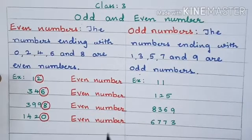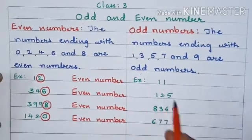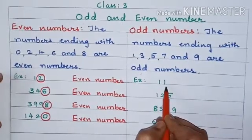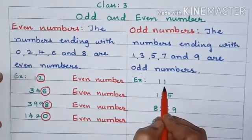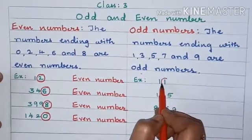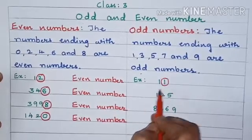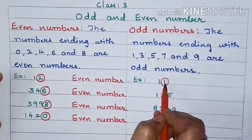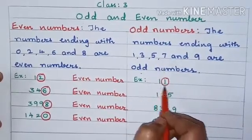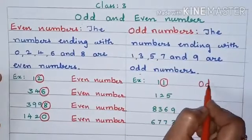Let us understand with an example. See children, here it is 11. So this number is 11. So what is the last digit? 1. So 1 is an odd number. So 11 is also an odd number.